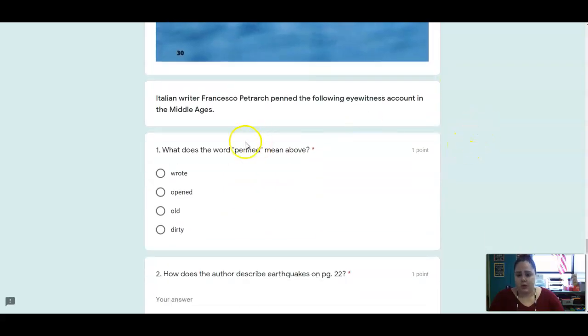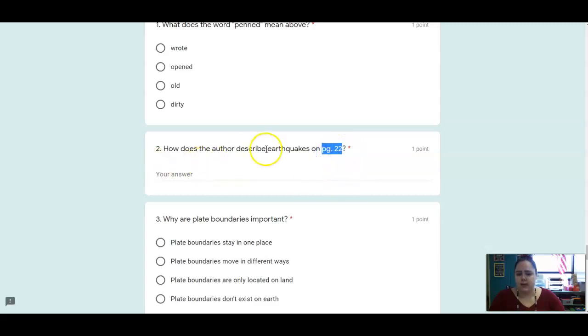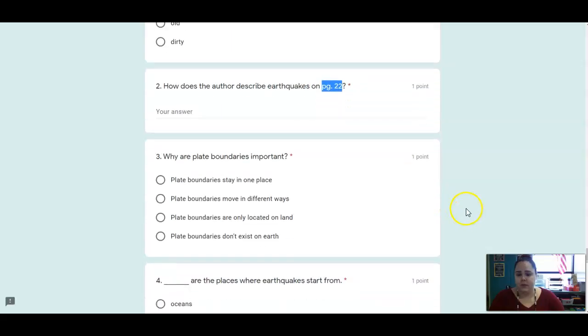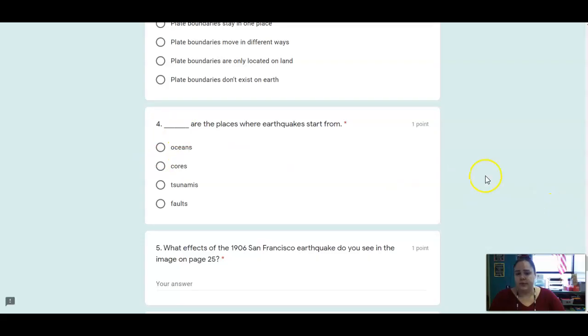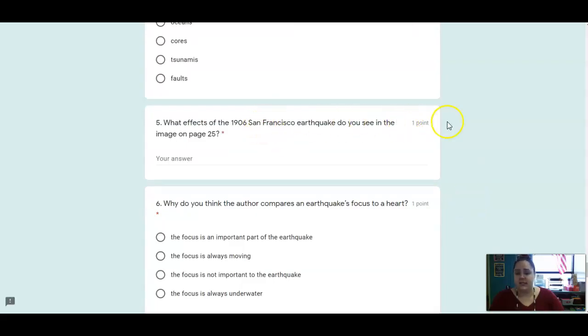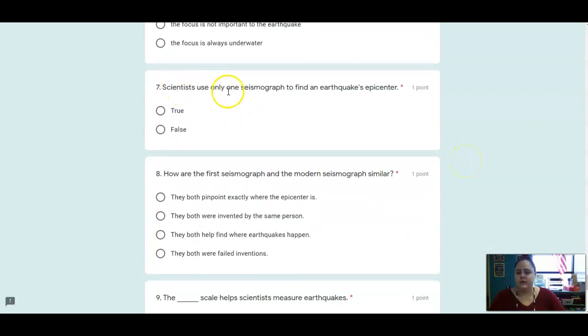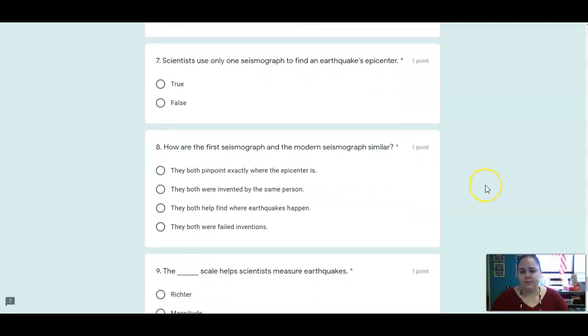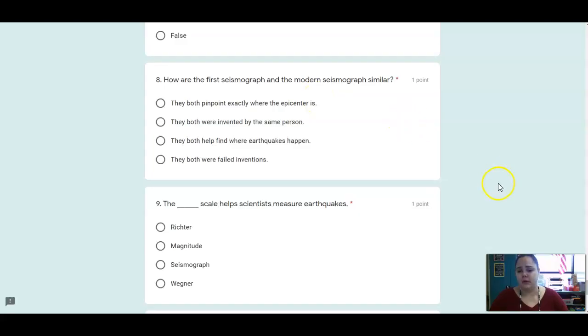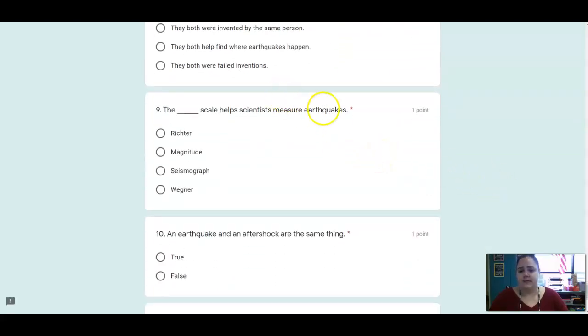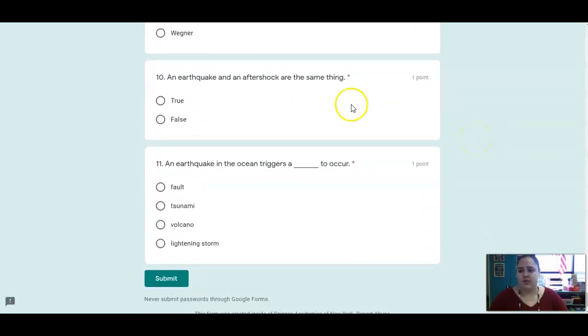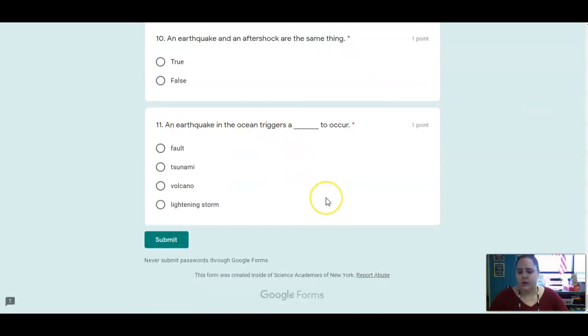Okay. The first one gives you a sentence. It uses the word penned and it wants to know what does it mean. Number two, go back to page 22 and tell me what words does the author use to describe an earthquake. Why are plate boundaries important? Blank are the places where earthquakes start from. Remember, look at that picture that showed us in the text. Number five, what effects of the 1906 San Francisco earthquake do you see in the image on page 25? So go back up and look at the image. What effects do you see? Why do you think the author compares the earthquake's focus to a heart? True or false, scientists only use one seismograph to find an earthquake's epicenter. Number eight, how are the first and the modern seismographs similar? Number nine, the blank scale helps scientists measure earthquakes. Number ten, an earthquake and an aftershock are the same thing, true or false. And number eleven, an earthquake in the ocean triggers a blank to occur. All right, that is your reading.